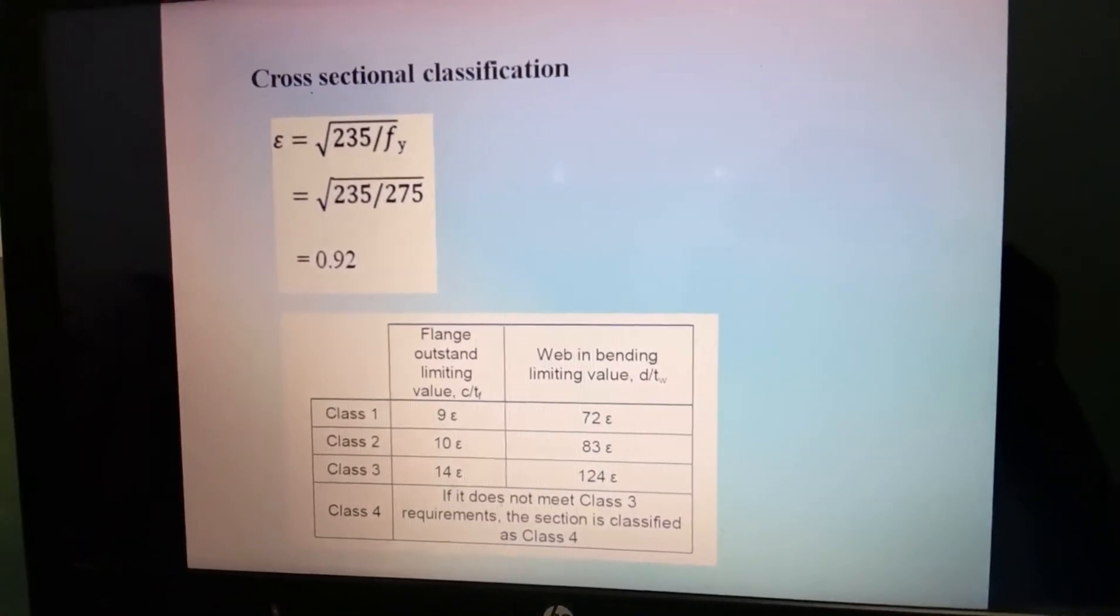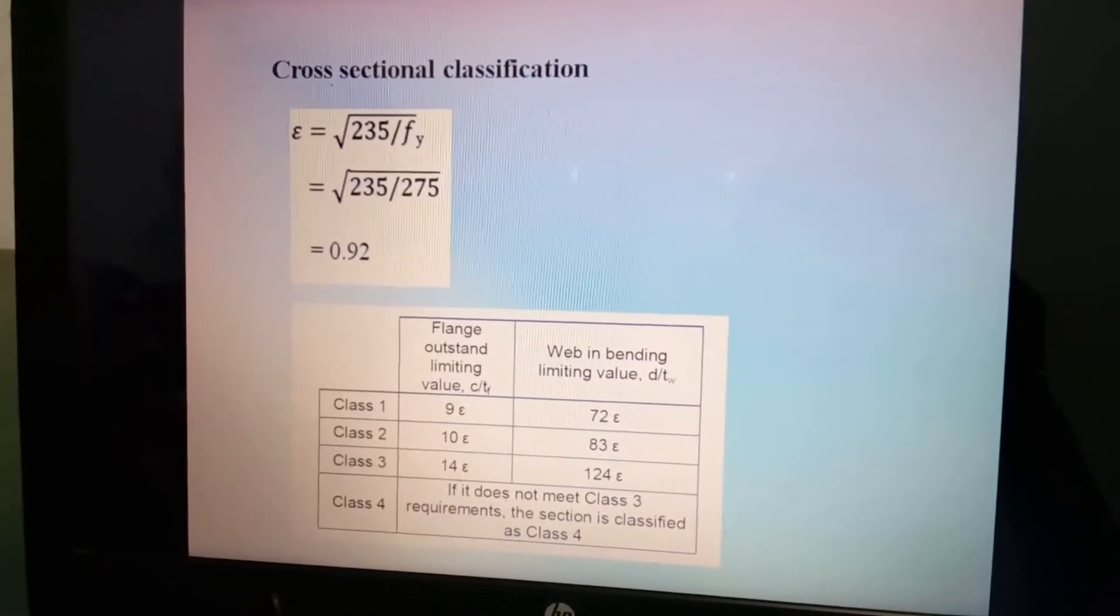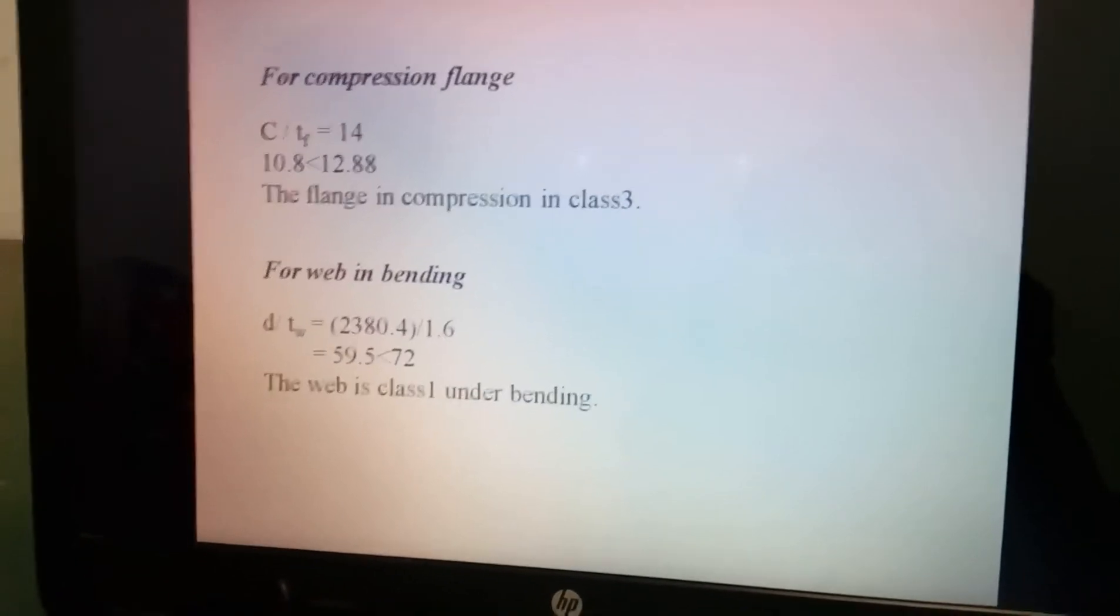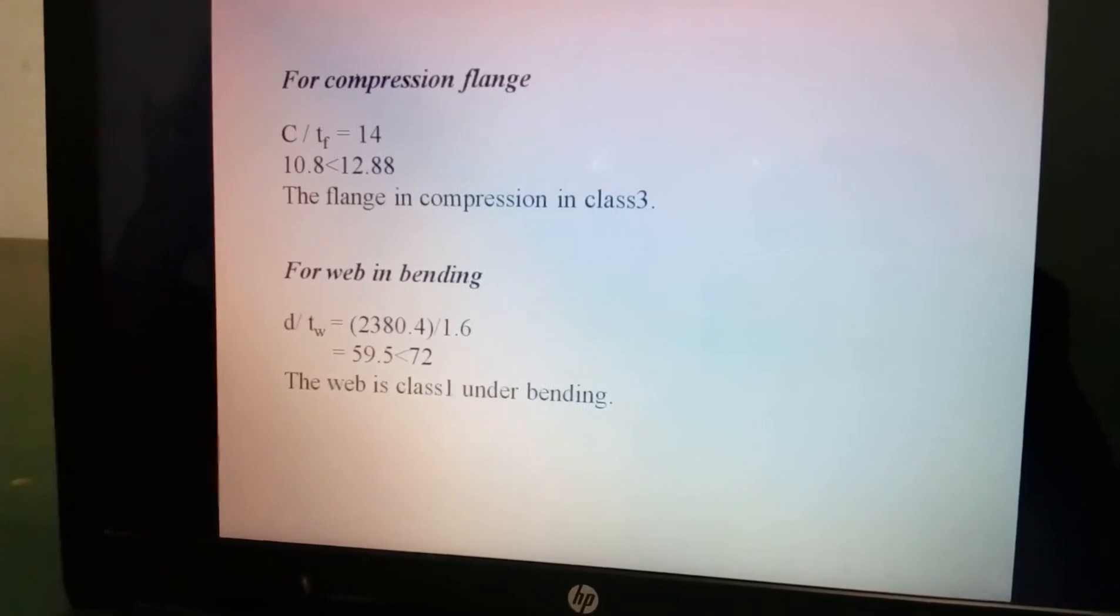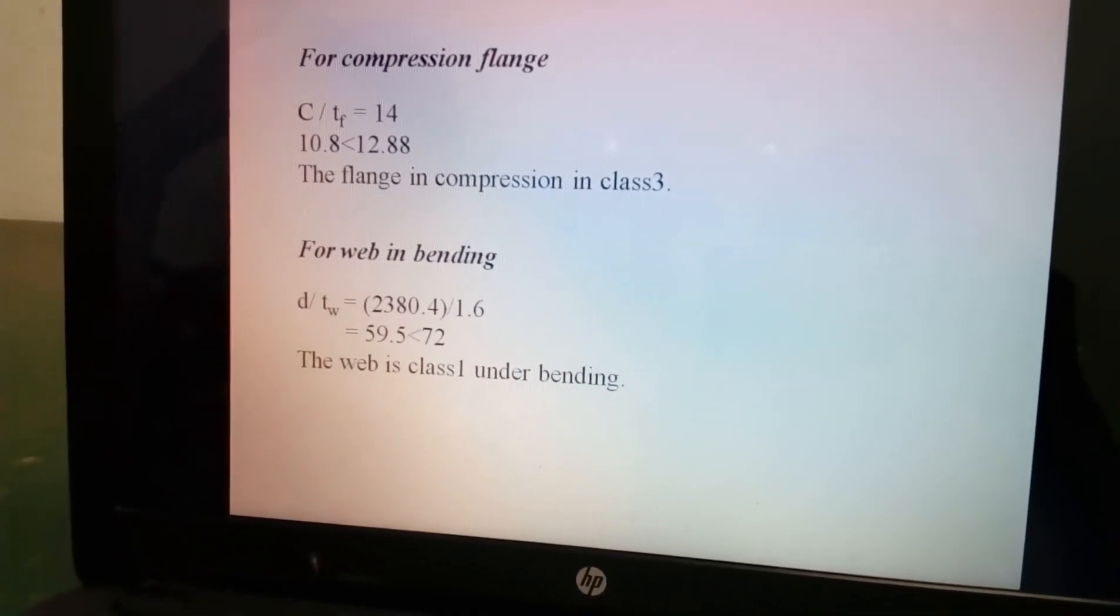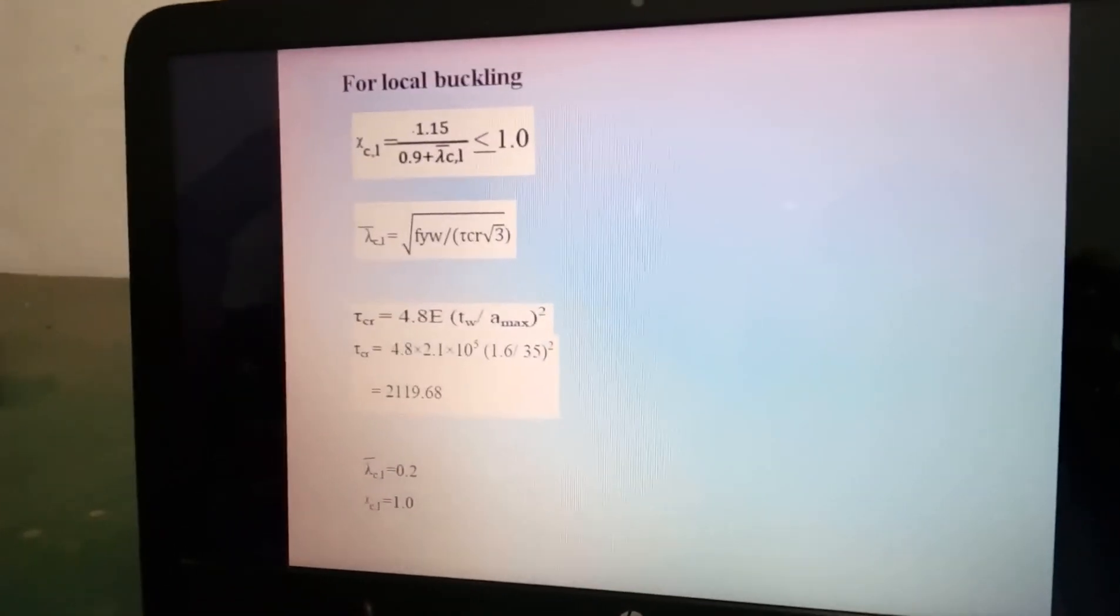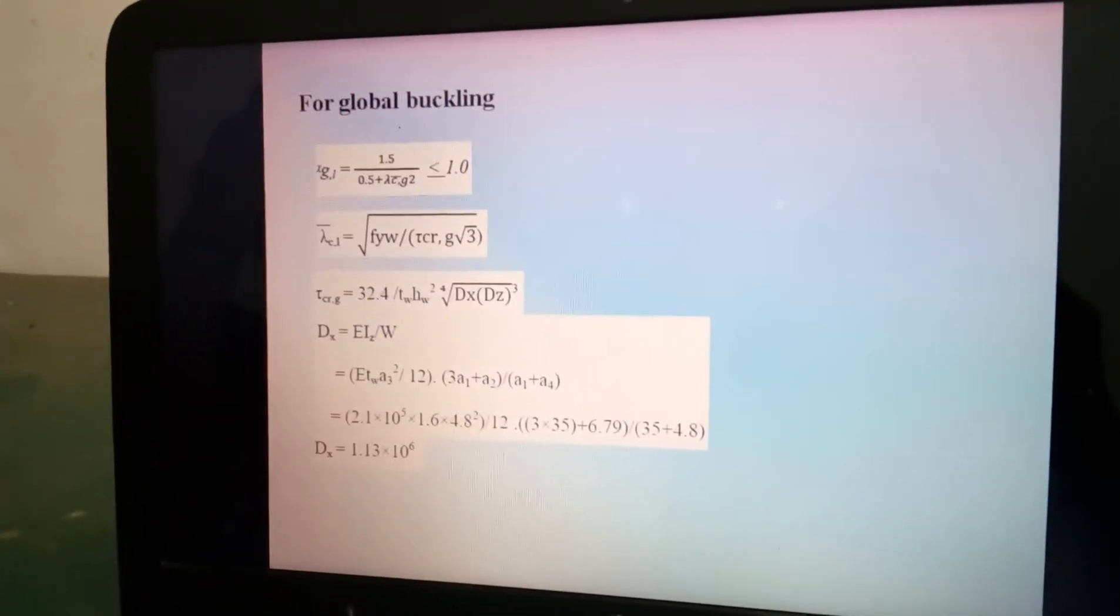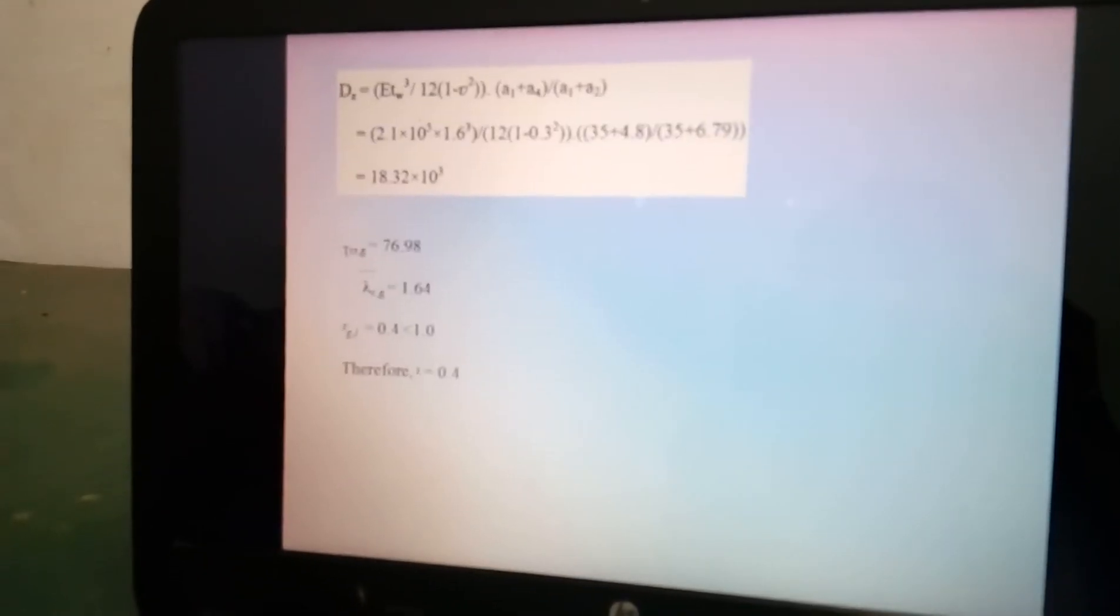These are the cross sectional classification. Sigma equals 0.92. For compression number, the flange is in compression in class 3. For web in bending, the web is class 1 under bending. For local buckling, lambda bar equals 0.2, xc equals 1.